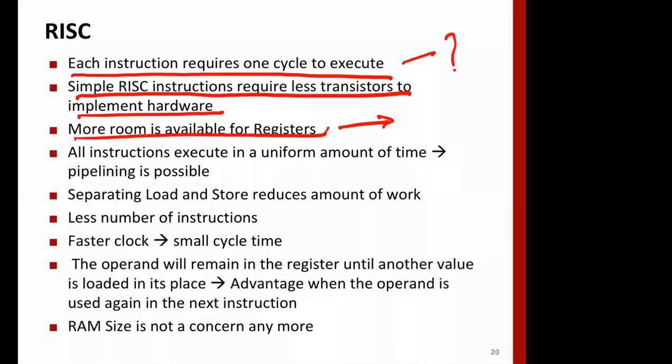All instructions are executed in a uniform amount of time because in RISC architecture, instruction length is the same — 32 bits — so various operations can be done at very fast speed and pipelining is efficient. Intel also does pipelining, but the claim is that RISC pipeline design is much simpler and can operate at a faster pace.